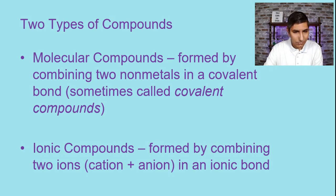So we have two types of compounds formed from those two types of chemical bonds. Now in this video we're going to be focusing on molecular compounds or these covalent compounds. In the next video we're going to be focusing on how to write the formulas and the names for ionic compounds.